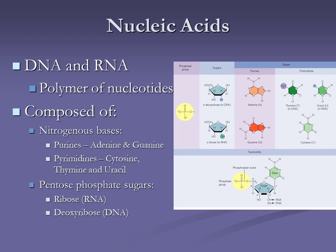Can anyone guess which DNA base is not present in RNA? T. The T is not in RNA — that's why they have these lined up. C is present in everything. T is only in DNA and uracil is only in RNA.